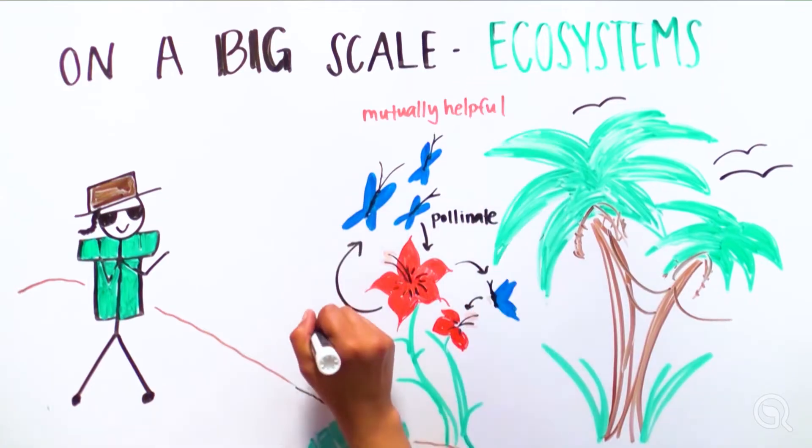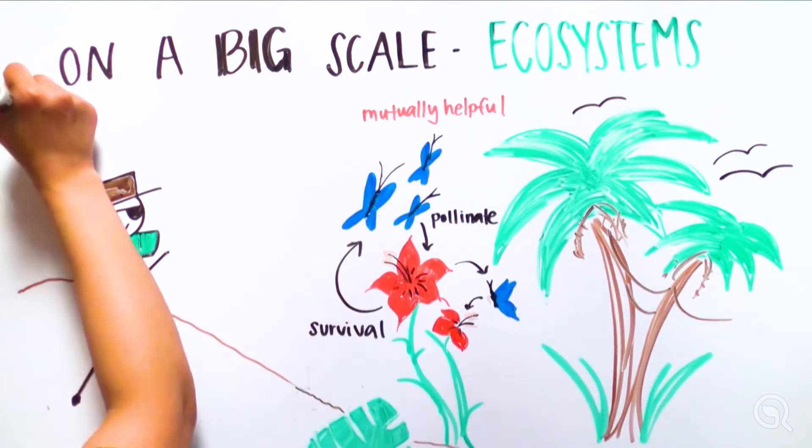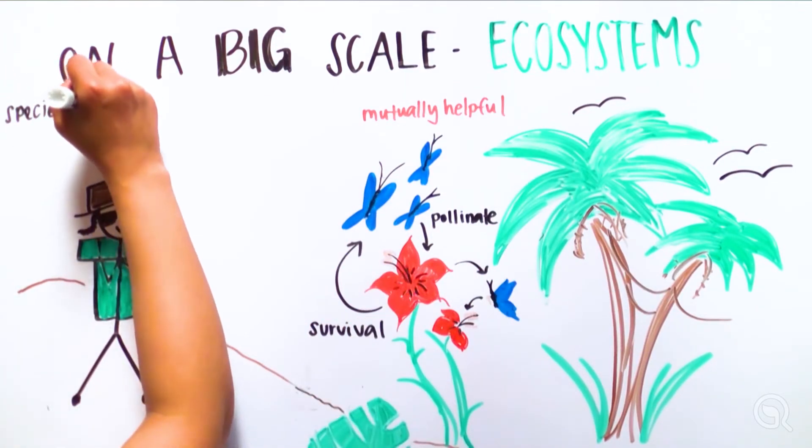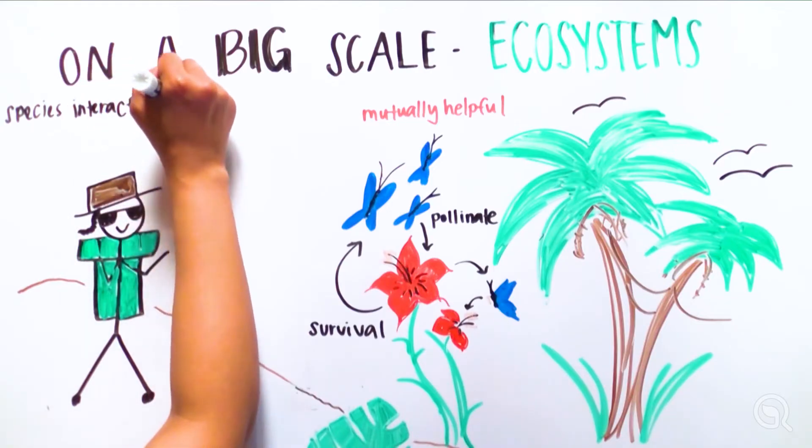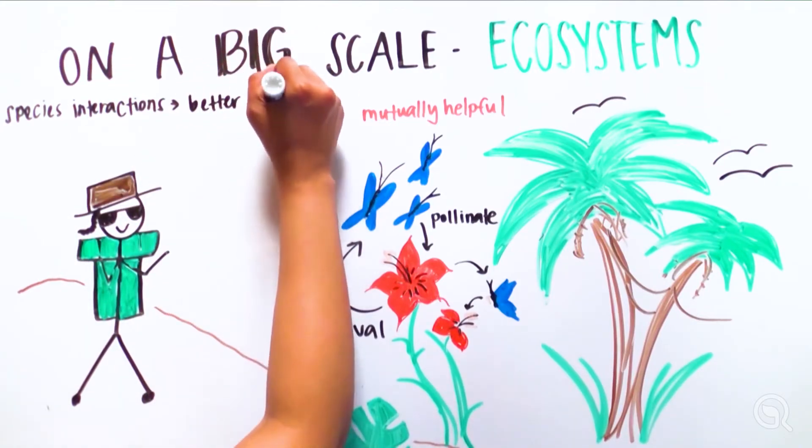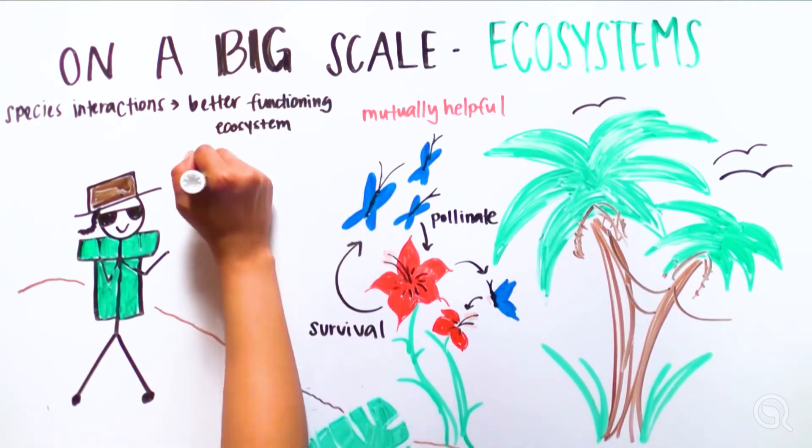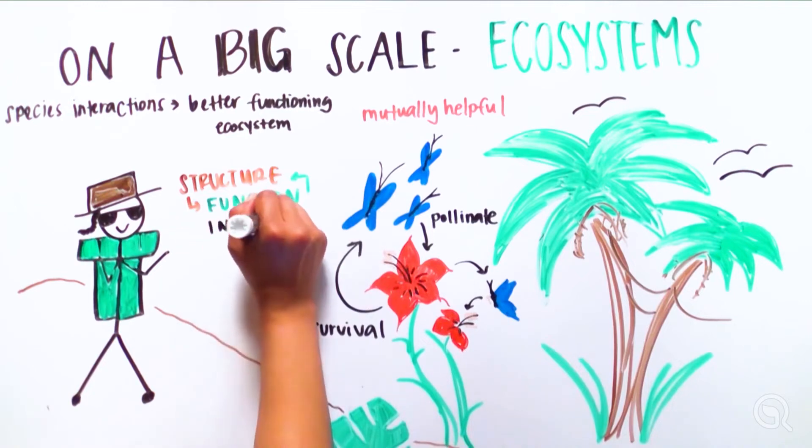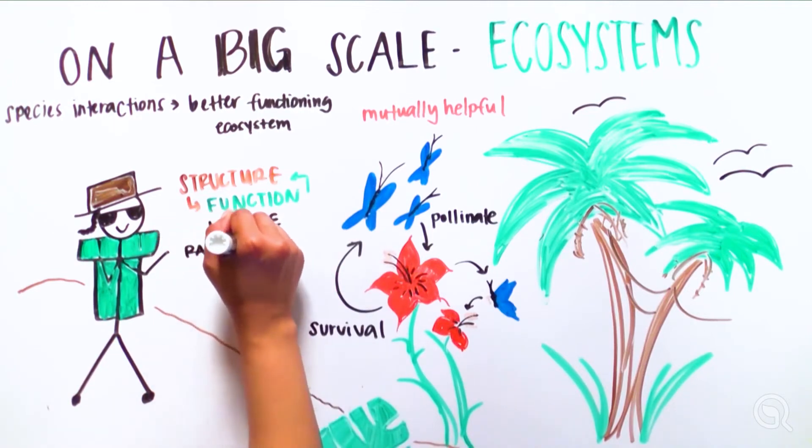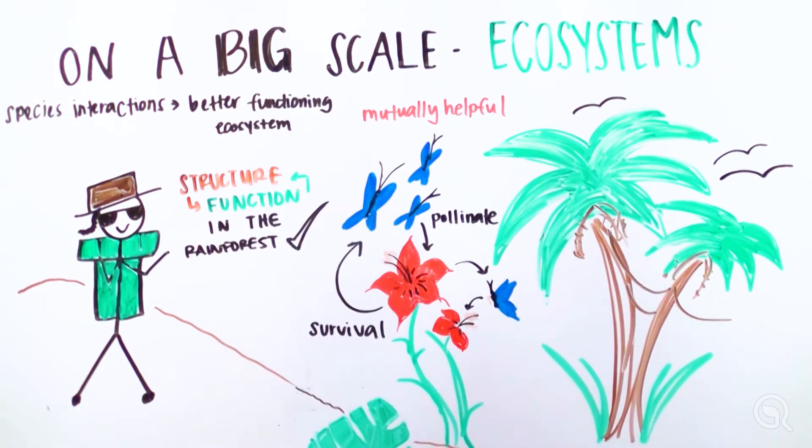Each species is dependent on others for its survival and reproduction. The more complex the ecosystem structure, the more species interactions, and the better the ecosystem functions. Species interactions are part of the rainforest structure, and they help the ecosystem function in important processes such as pollination and survival. Structure determines function in an ecosystem, like the rainforest.